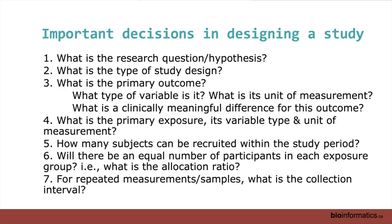One slide on important decisions in designing any study. What is your research question hypothesis? It usually has two parts — an X and a Y and how they're related. What study design are you going to select to test your question? What is your primary outcome? What kind of variable is it — a yes/no variable or a continuous variable with units of measurement? And if you want to know about microbiome influences on this variable, what is a meaningful difference in this primary outcome, which usually is a health outcome?